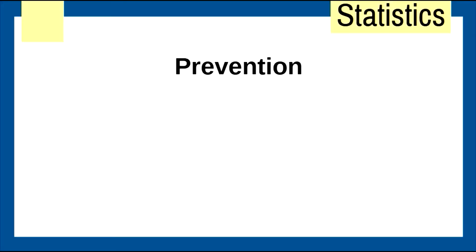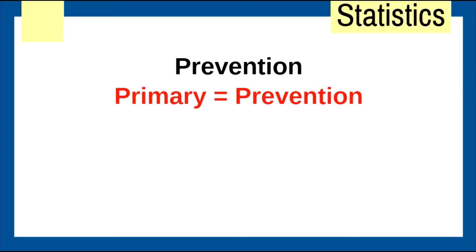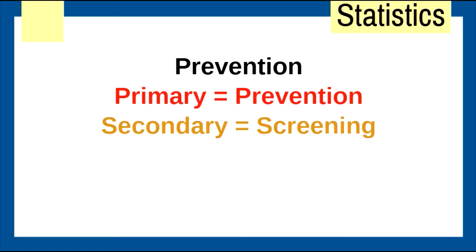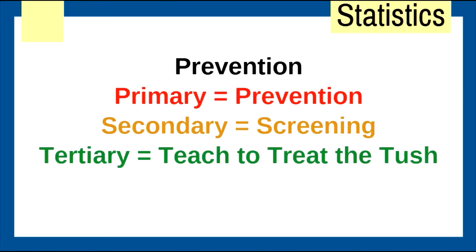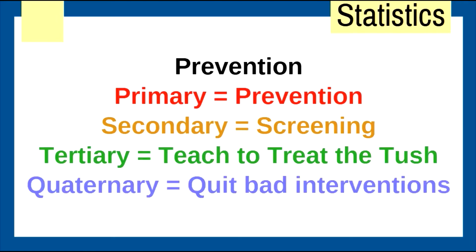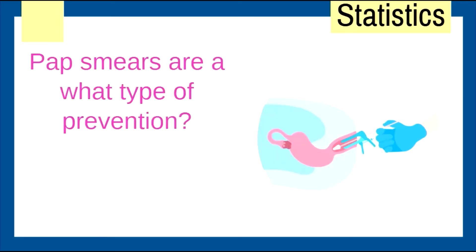If you know this slide, you'll know everything you need to know for prevention. Primary equals prevention — like with vaccines. Secondary equals screening — any screening test is secondary. Tertiary: teach to treat the tush. I'll explain what this means soon. And quaternary: quit bad interventions. Let's explain all of this with examples.